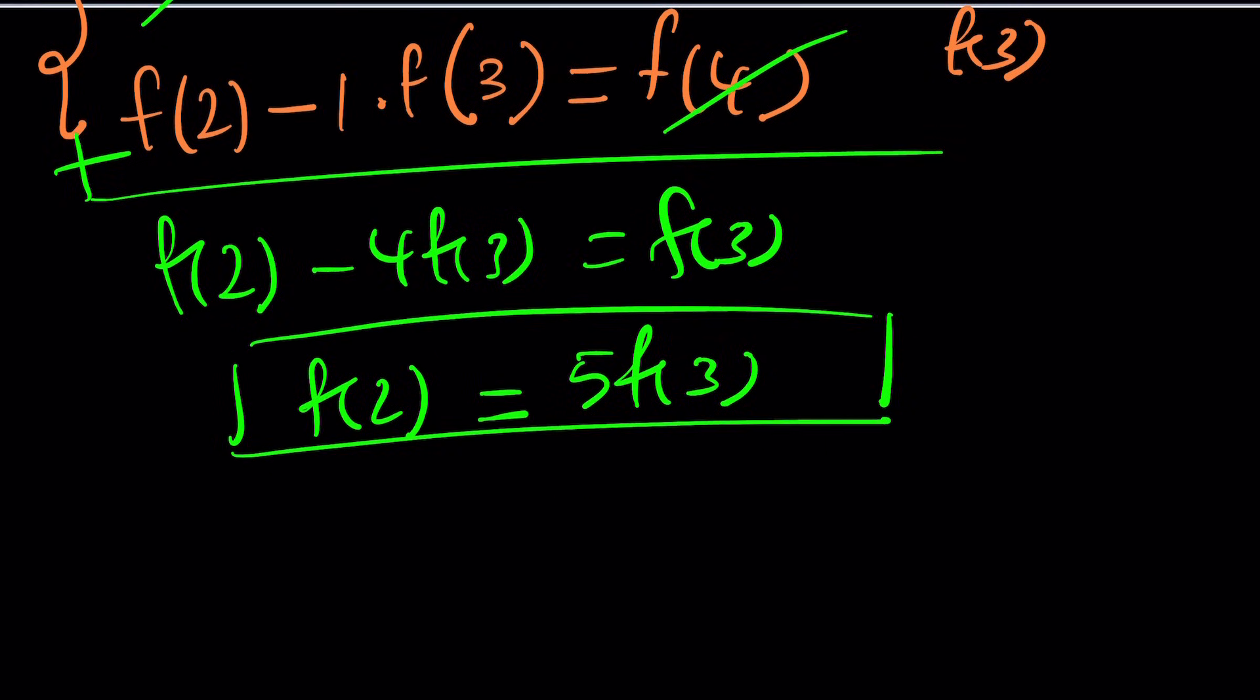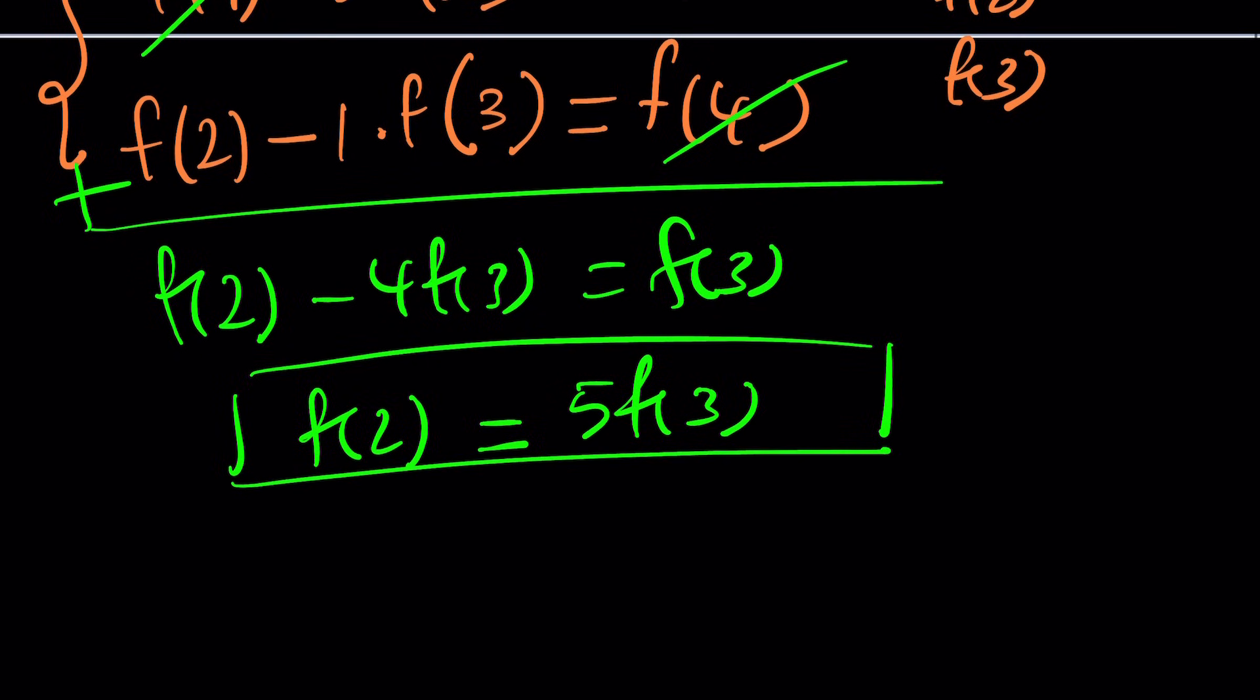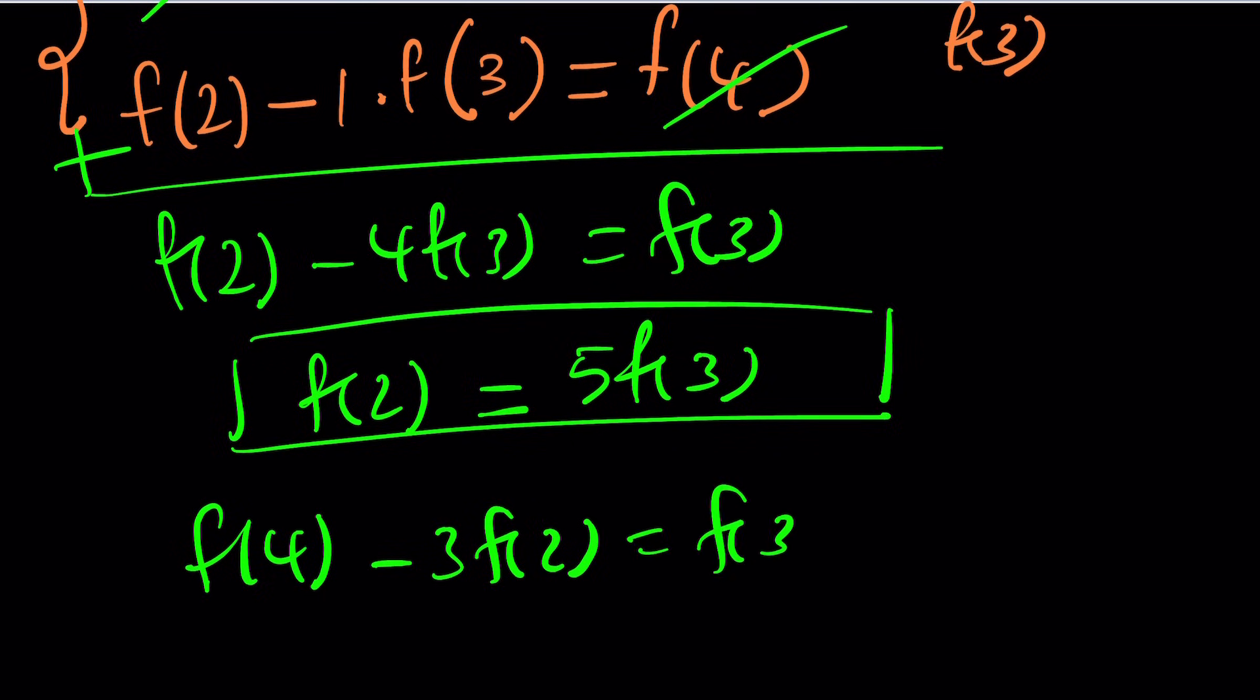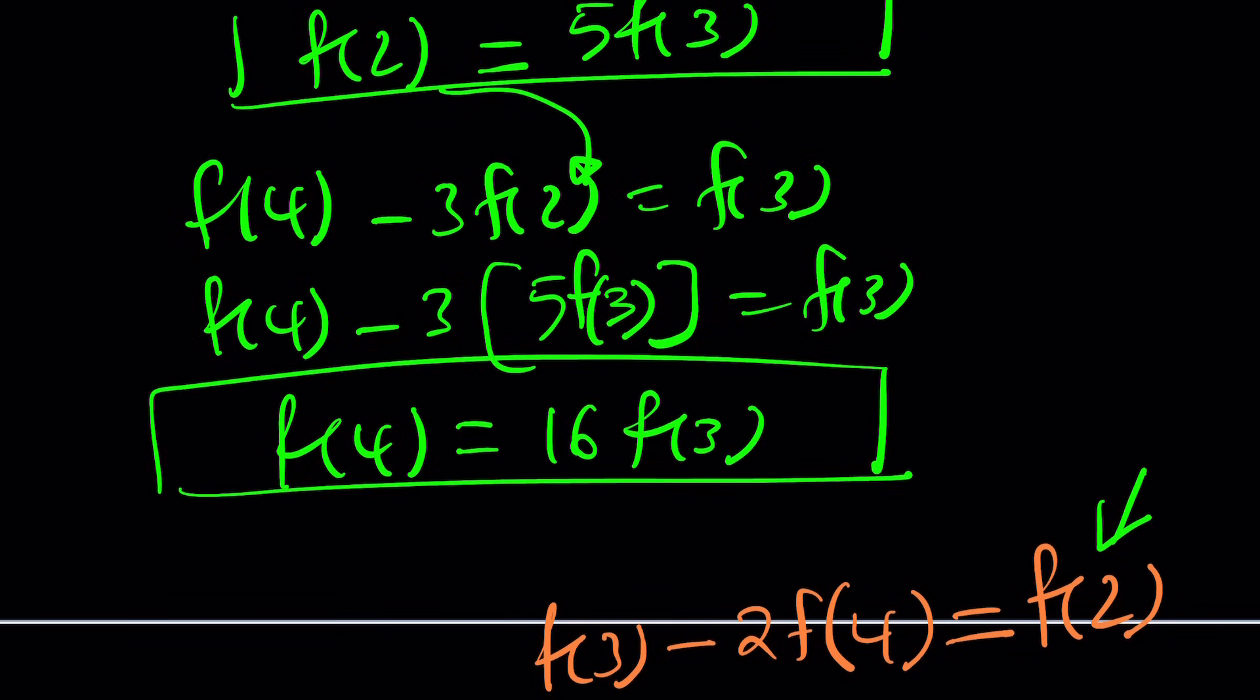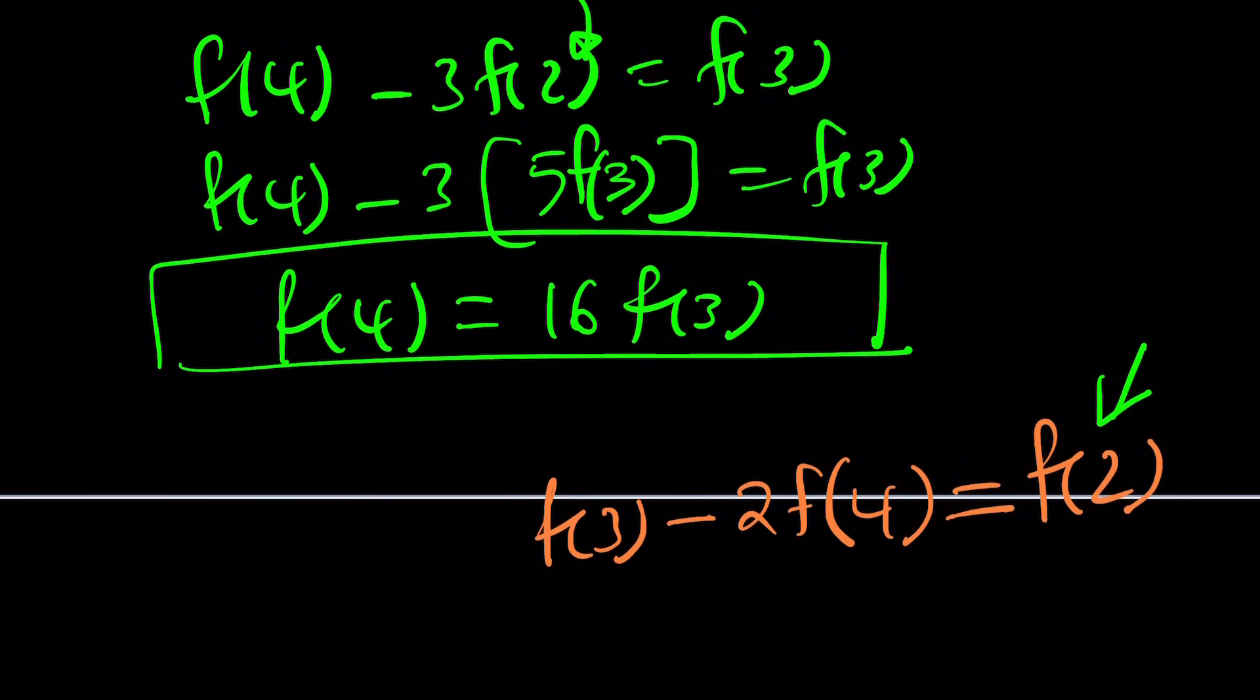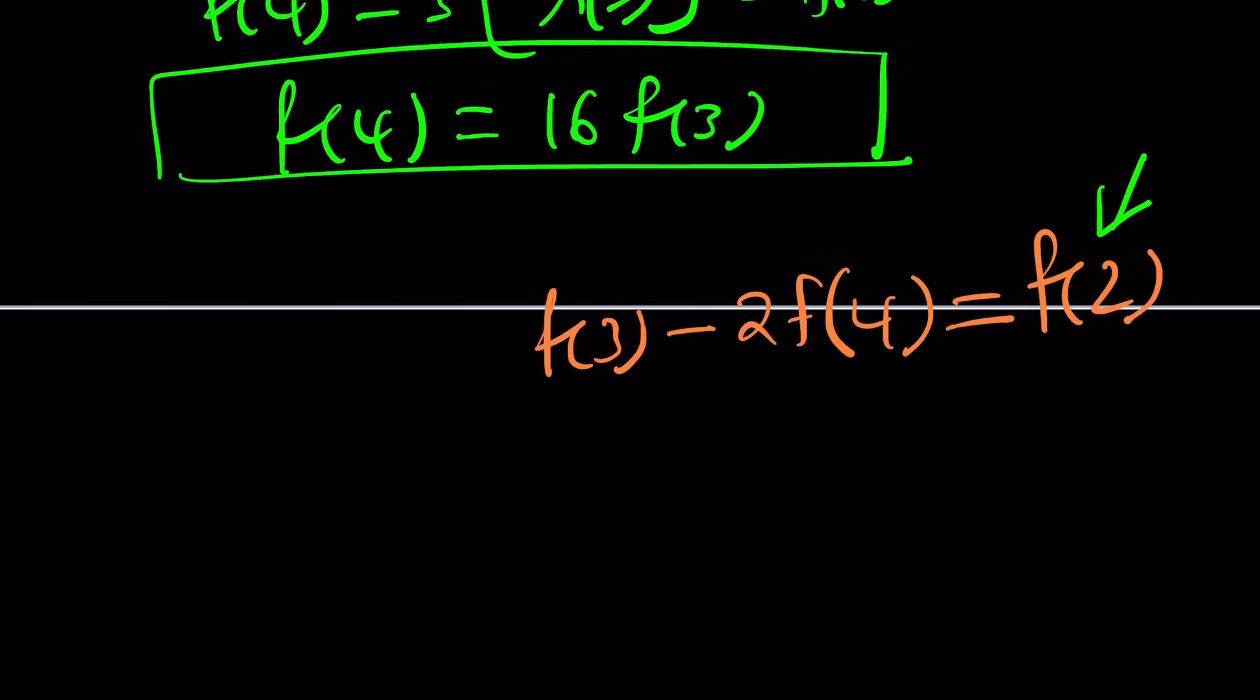Now we're going to get the following: f(2) minus 4f(3) equals f(3). And this is nice because it gives me f(2) in terms of f(3), which is 5 times f(3). This is something I can definitely use in these equations to simplify. But here's the thing. I know f(2) in terms of f(3), so why not plug it into one of these equations? We can substitute f(2), replace it with 5f(3), so we can find f(4) in terms of f(3). So let's go ahead and take the first equation. f(4) minus 3f(2) equals f(3). Now let's replace f(2) with this. So f(4) minus 3 times f(2), which is 5f(3).